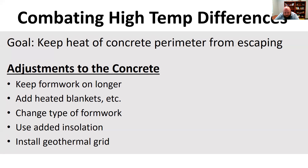Another option is to install a geo-grid on the outside to help increase the temperature of that concrete. There are lots of different ways to control the temperature differential — you can do many things to keep the middle slab temperature and the differential down.